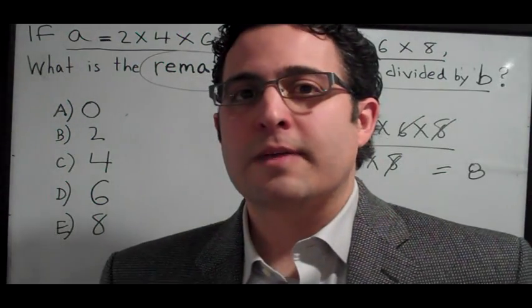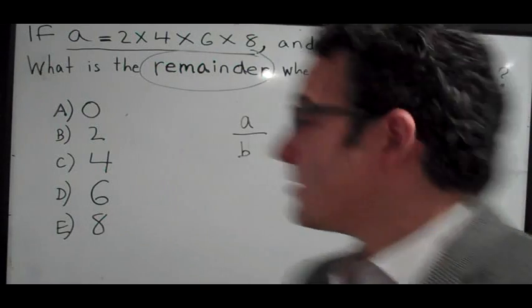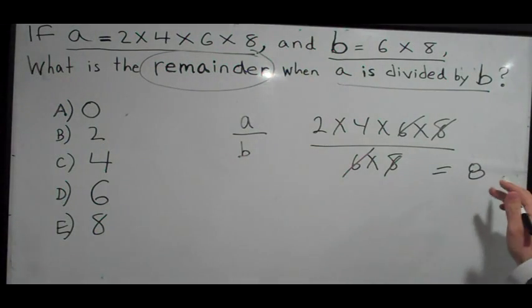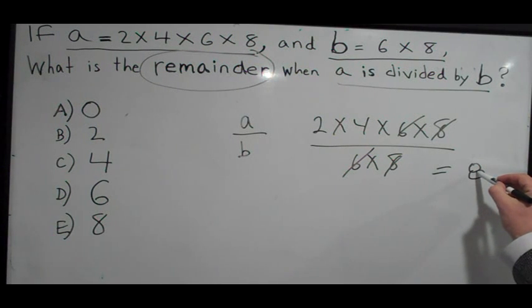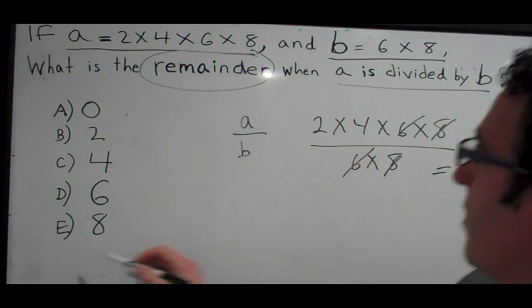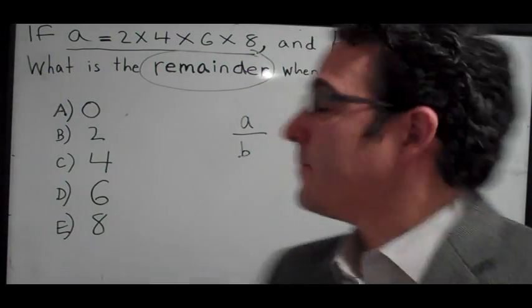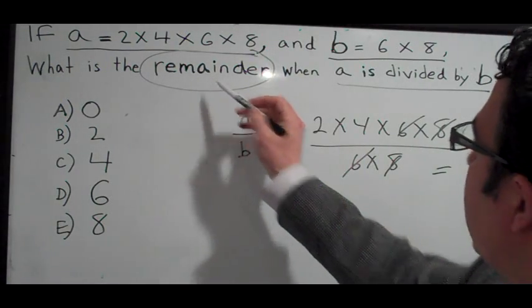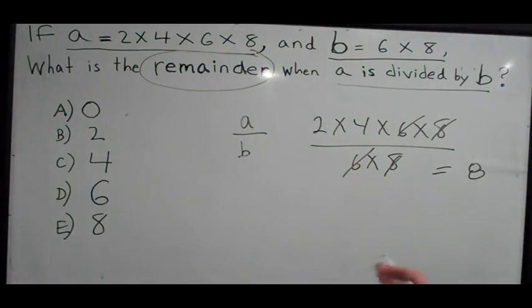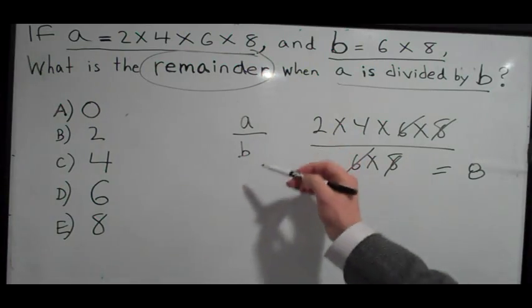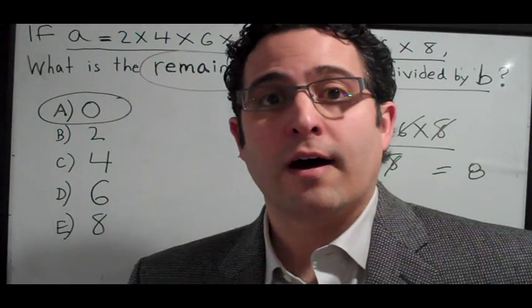Now this is where a lot of students make a mistake, even top level students. They're going to get so excited and wrapped around the fact that they solved the question that's 8, and then they're going to circle E. But we're doing careful work. We know that we're looking for the remainder, and the remainder is clearly 0. There is no remainder when A is divided by B. You're going to circle A and move on.